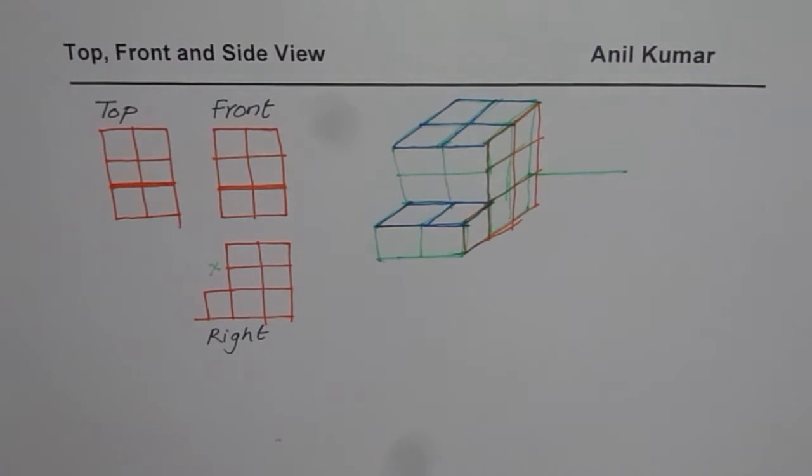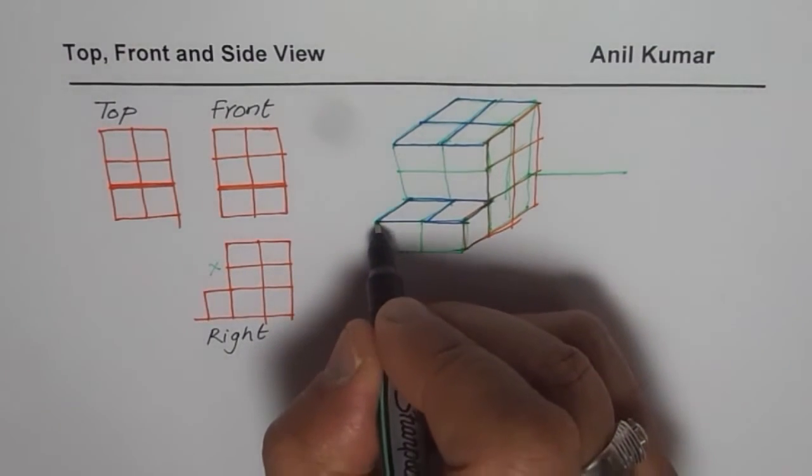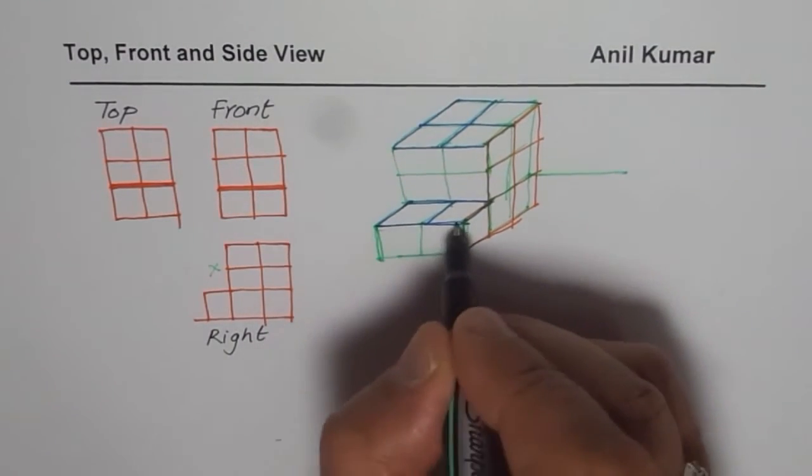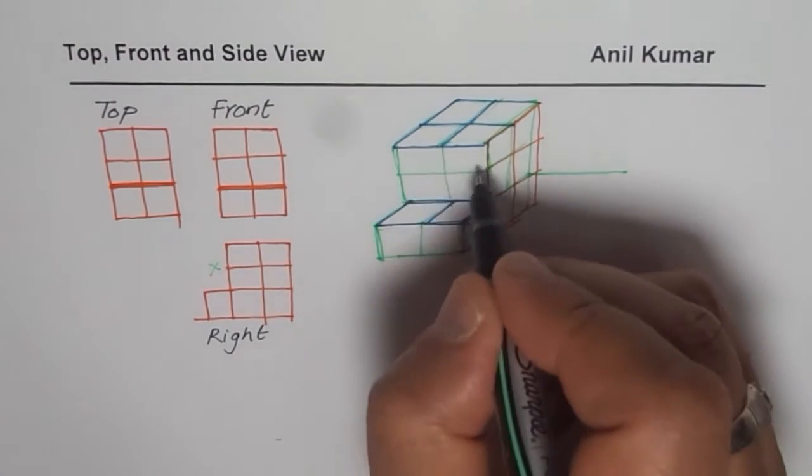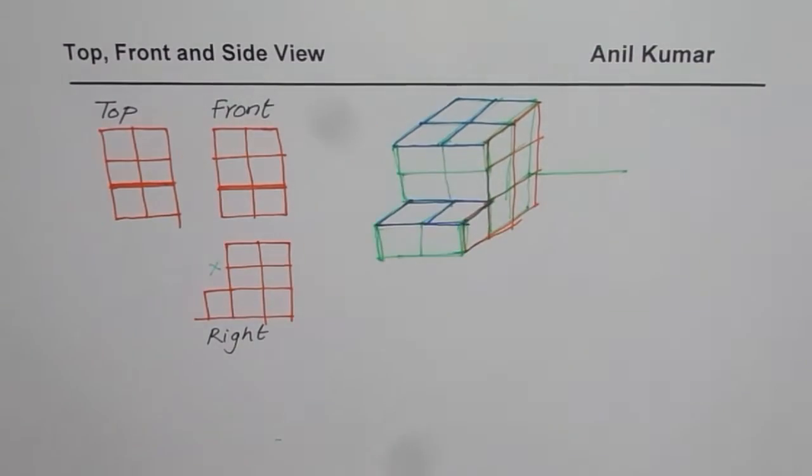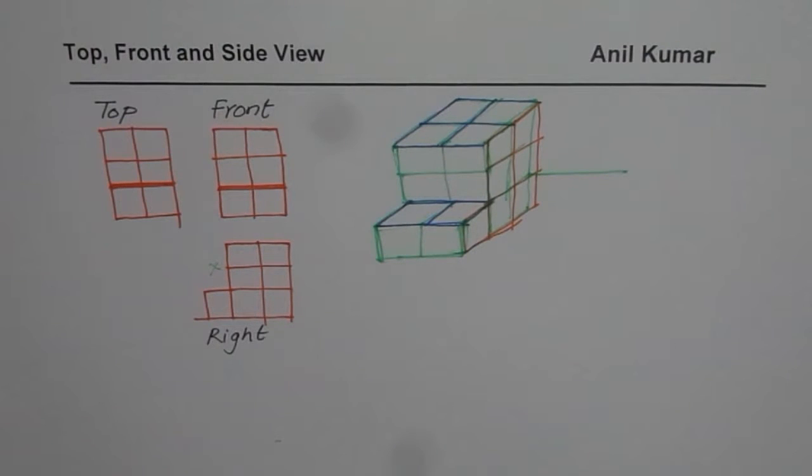And from the front, you can see that from the front we have here change in height, change in height. So you get this to the second level. Do you see that? So that three dimensional figure represents what we have.